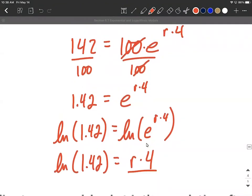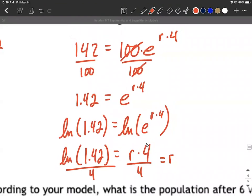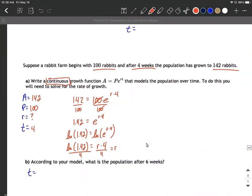So to finish this up and get r all by itself we need to move the four to the other side. So we'll divide both sides by four. And we have our rate is the natural log of 1.42 divided by four.